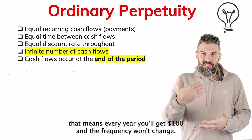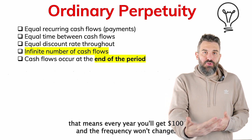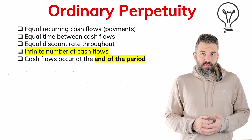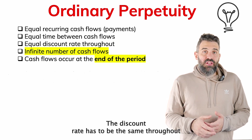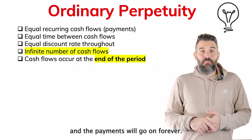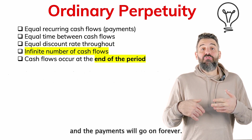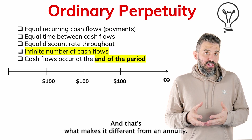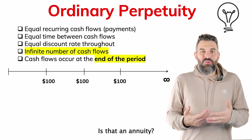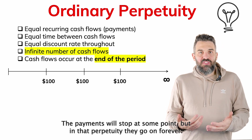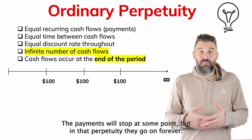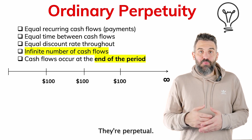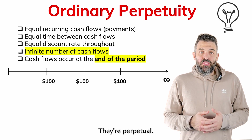There's also going to be an equal amount of time between the payments or cash flows. So if I say $100 every year, that means every year you'll get $100 and the frequency won't change. The discount rate has to be the same throughout, and the payments will go on forever — and that's what makes it different from an annuity, where payments stop at some point.